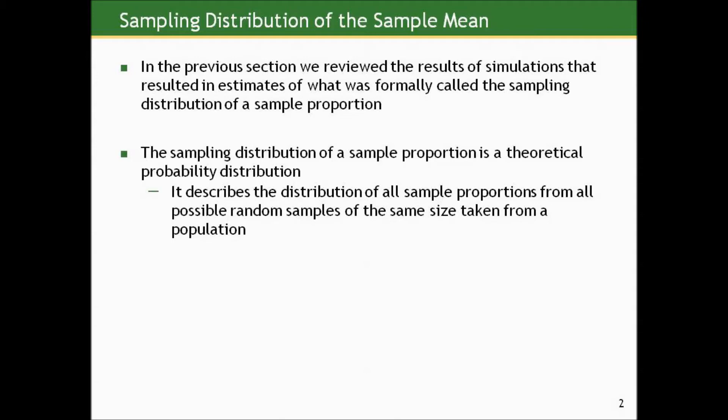The sampling distribution of a sample proportion is a theoretical probability distribution. It describes the distribution of all sample proportions from all possible random samples of the same size taken from a population. And again, we're never going to take more than one sample. So these simulations, while useful to illustrate a concept, are not how we're going to actually do real research.